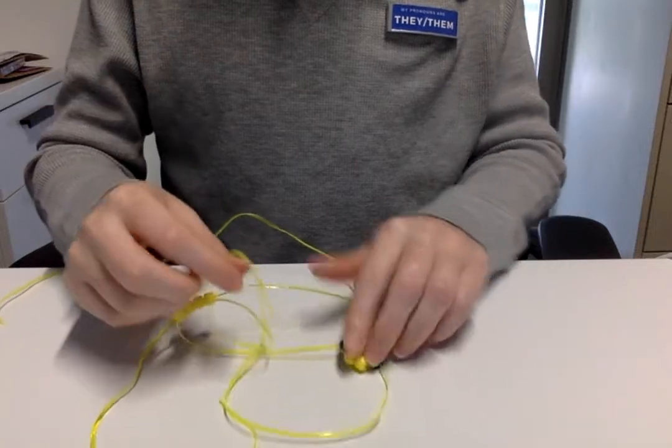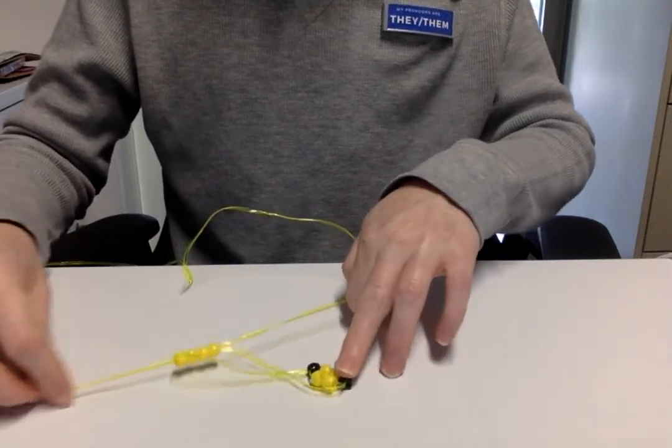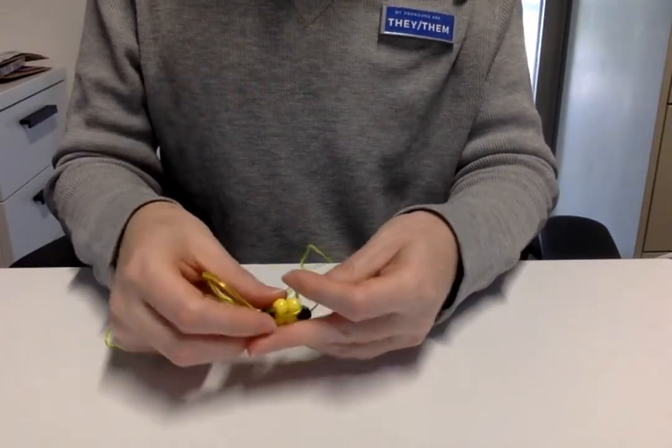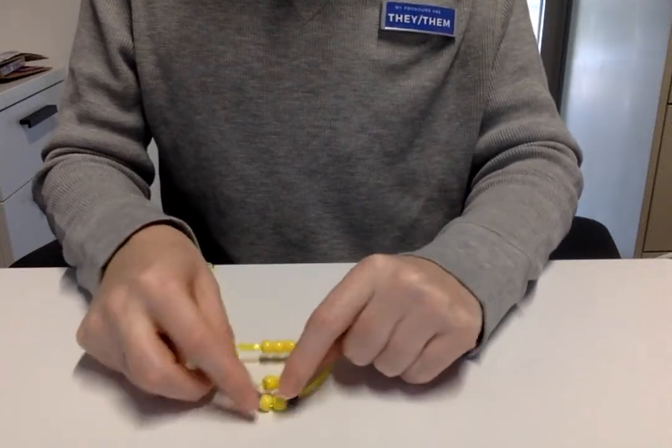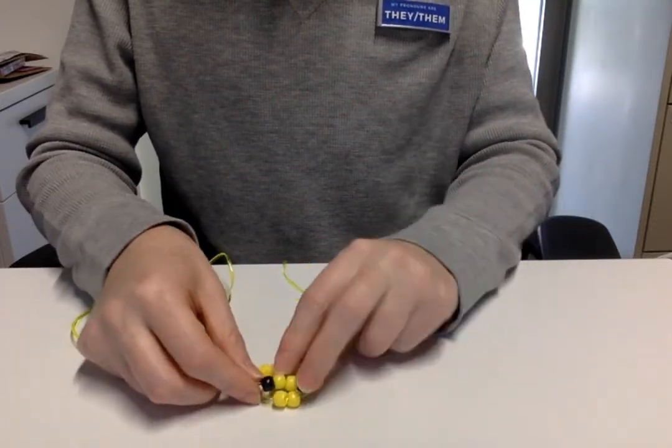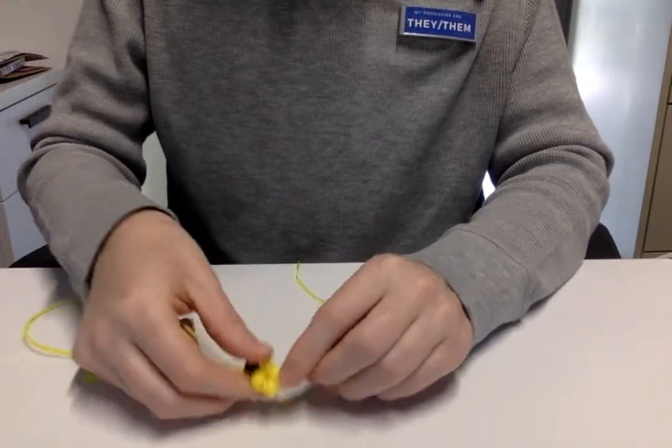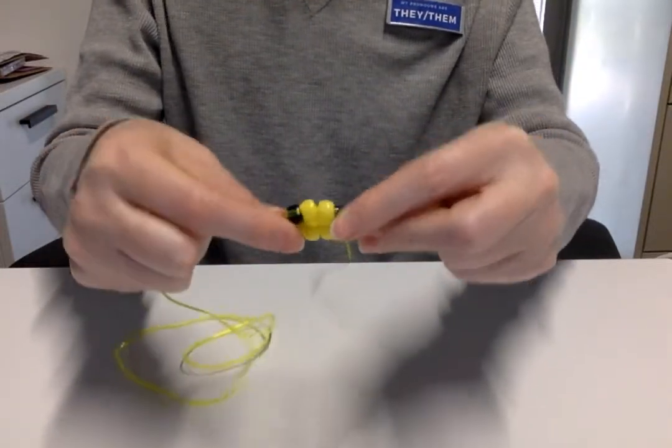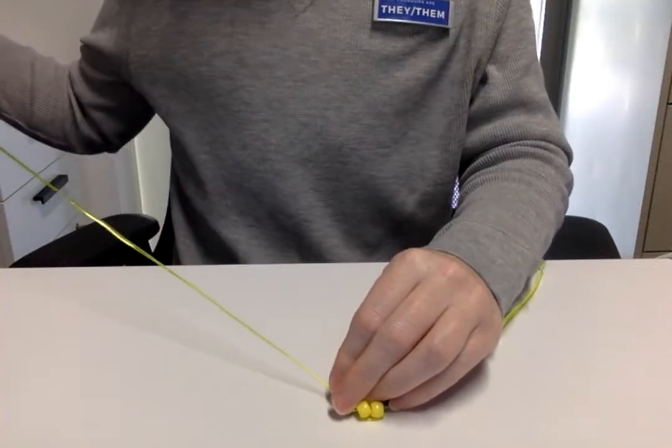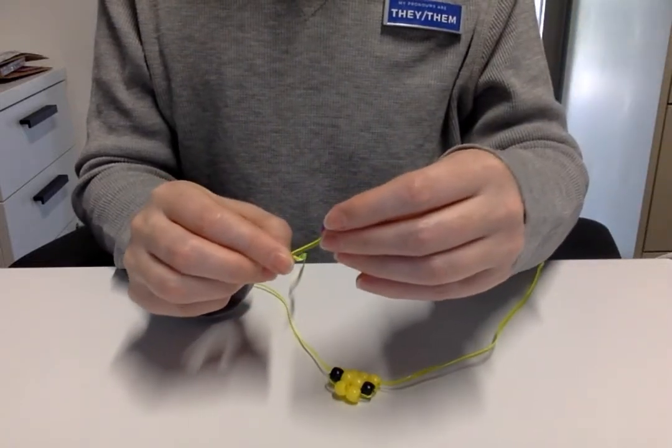Okay our next row is going to be four yellows. So when I was preparing to do this I found a really great tutorial on how to make the—oops. I'm trying not to get this all twisted up because that just makes things awful.